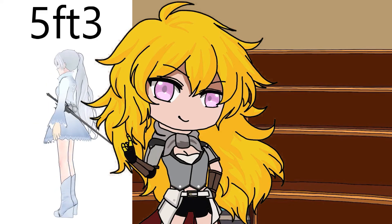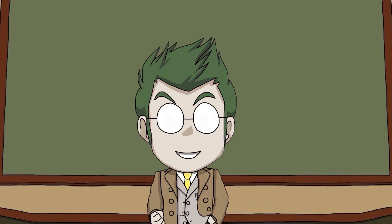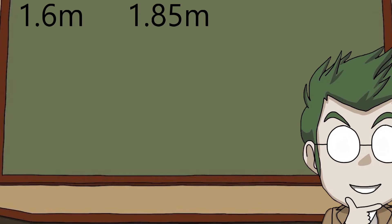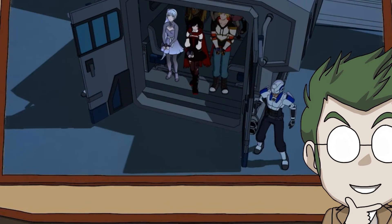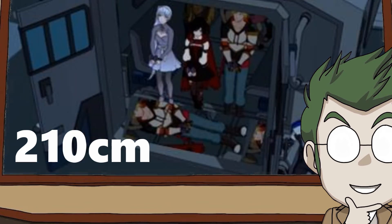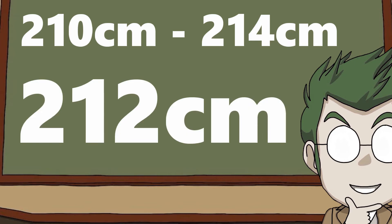How tall are they? Weiss is five foot three and Jean is six foot one. In metric? Fine — one point six meters and one point eight five meters. Right then, if we use Weiss and Jean as rulers in this scene, we get a door width of 214 centimeters using Weiss and 210 centimeters using Jean. Four centimeters may not seem like a big difference, but let's call it 212 centimeters so we're as accurate as possible.